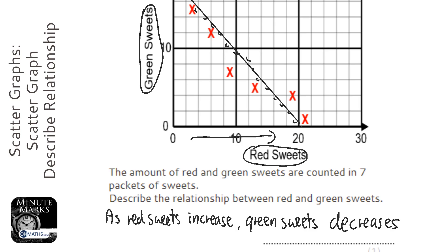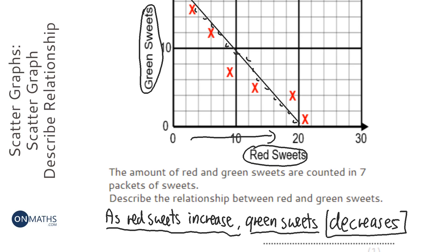So, when it says describe the relationship, it's looking for you to mention what the context of the question is about. It's about red sweets and green sweets. And always start off with as the one on the x-axis increases, the one on the y-axis. And this is the word that changes. That's either going to be increase or decreases.